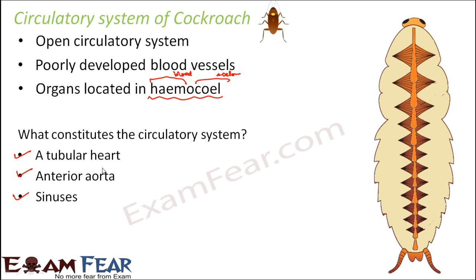The heart is always the pumping organ, pumping blood to different parts of the body. The anterior aorta is a blood vessel — blood vessels are not completely absent but are not well developed, so blood is present in the body cavity. Sinuses are ill-defined blood spaces inside the body where blood is present; we cannot call them blood vessels, so they are given the name sinuses.